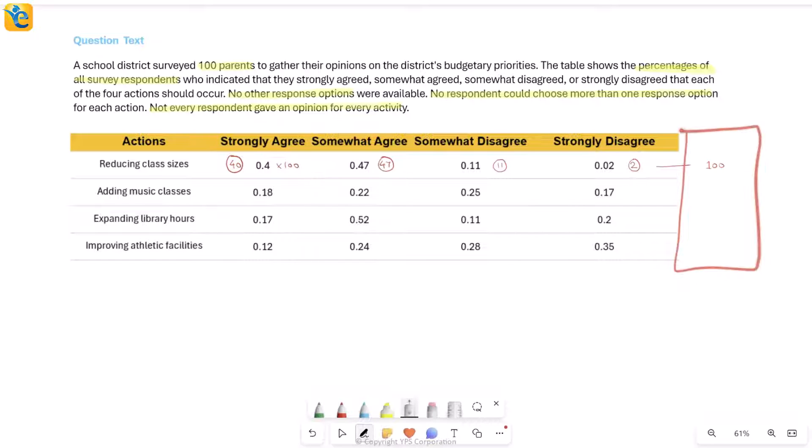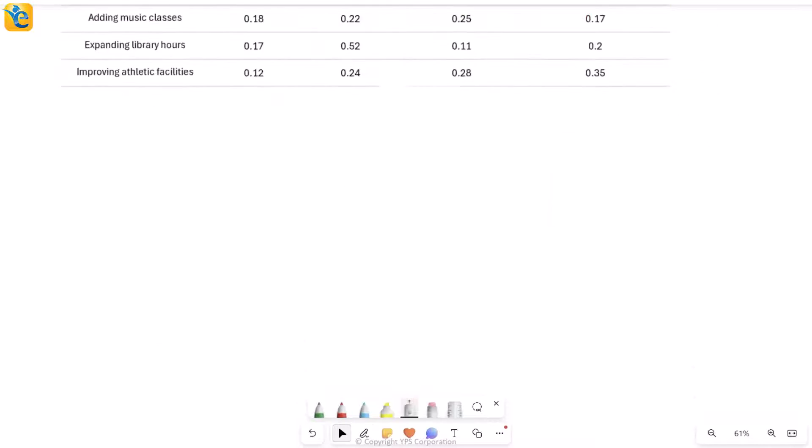These remaining people were those who did not give an opinion. I don't have a category written here, but still we understand it is the difference between 100 and the sum from all these categories combined. So with this, we completely understand everything that is given to us.